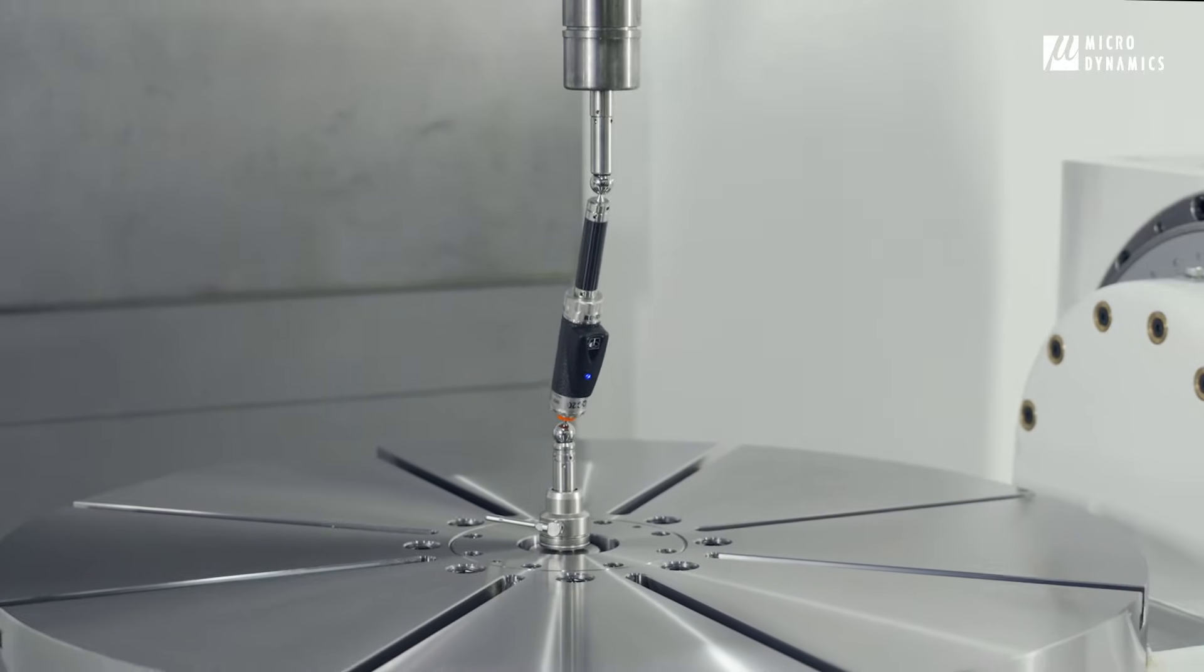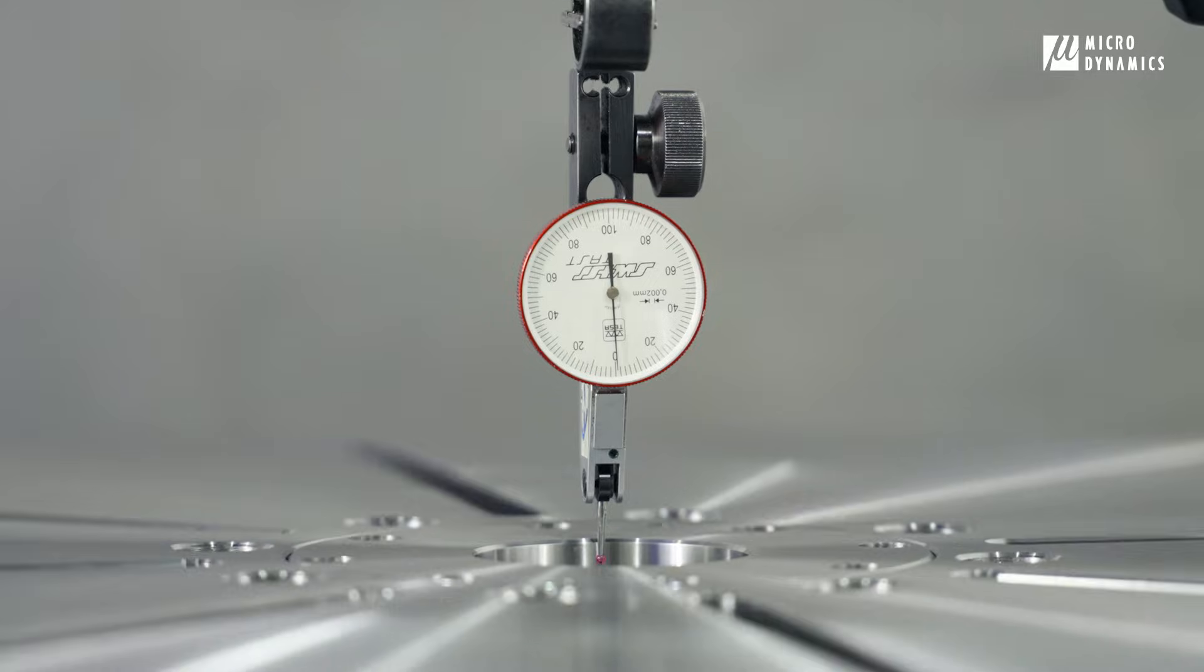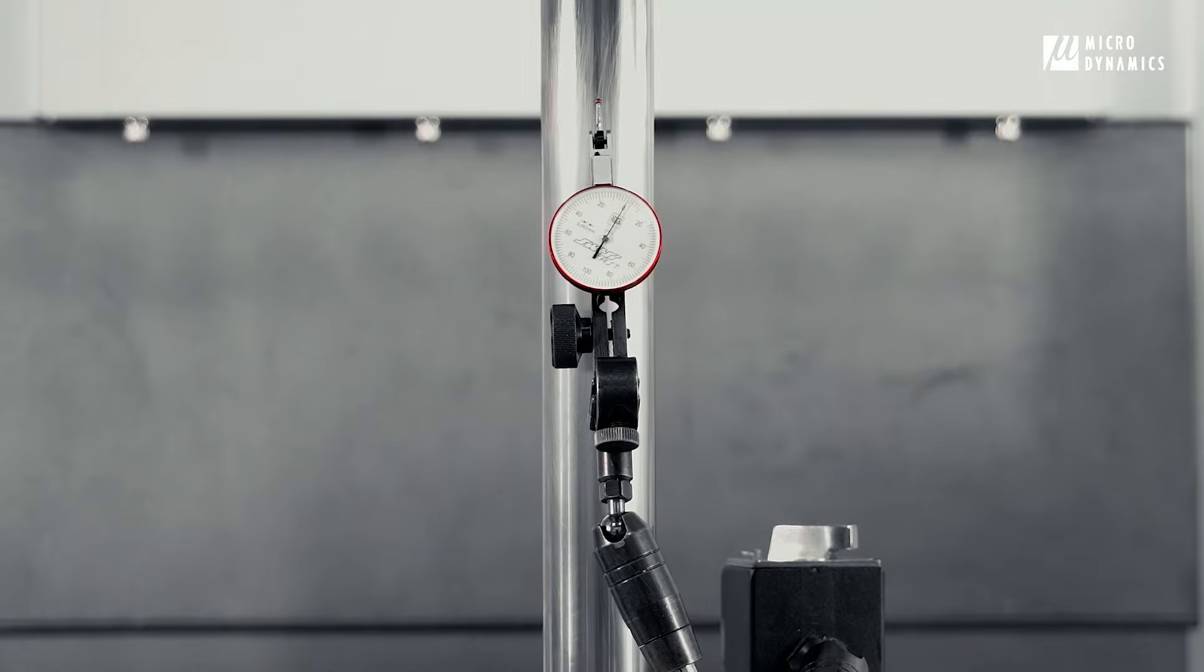The double ball bar test ensures precise machine compensation, maintaining accuracy within an impressive 5 microns.